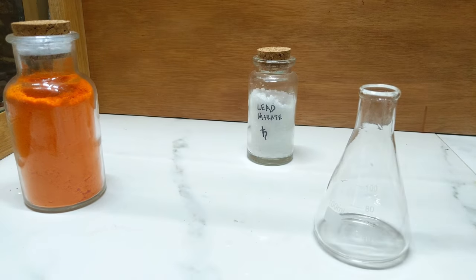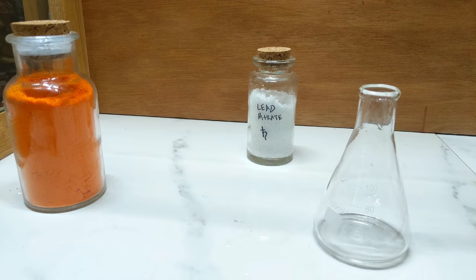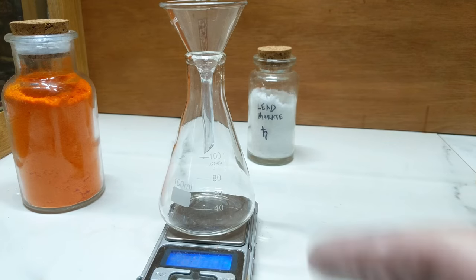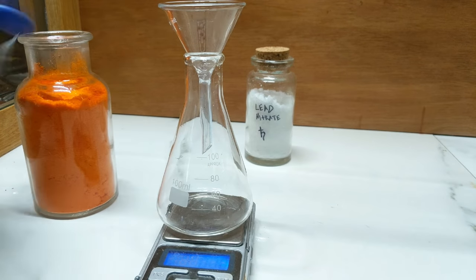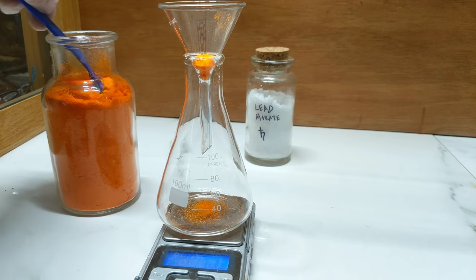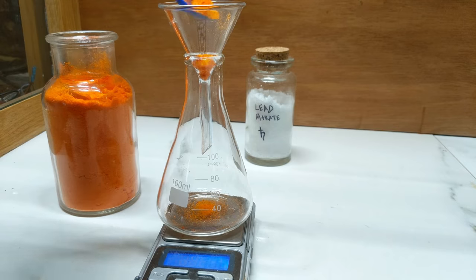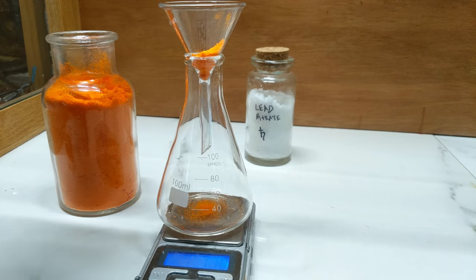Place that to the side, and into here we will be putting 2.25 grams of potassium dichromate.